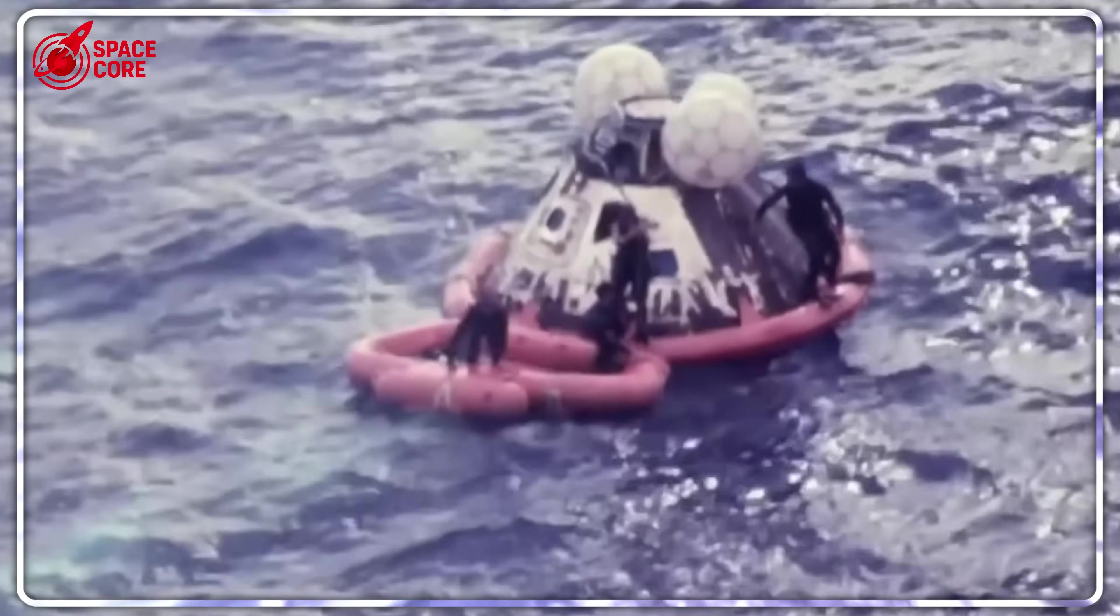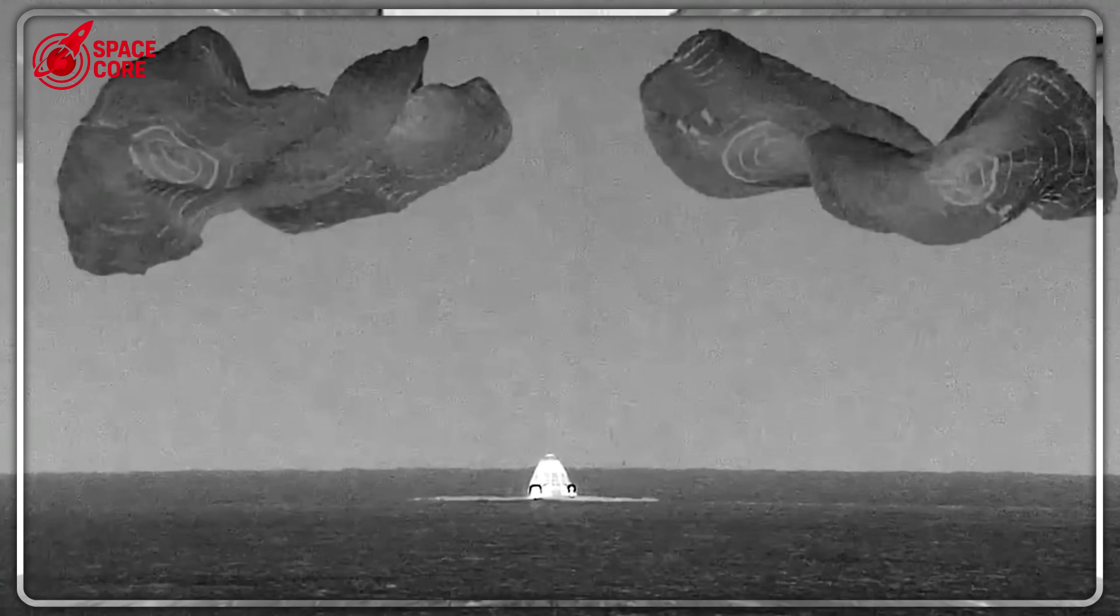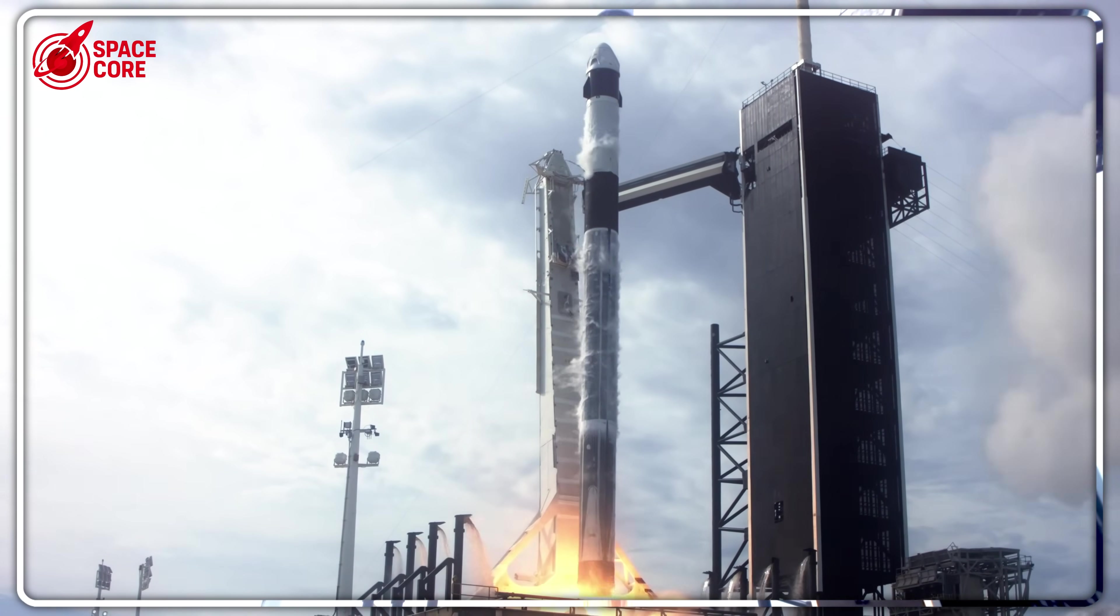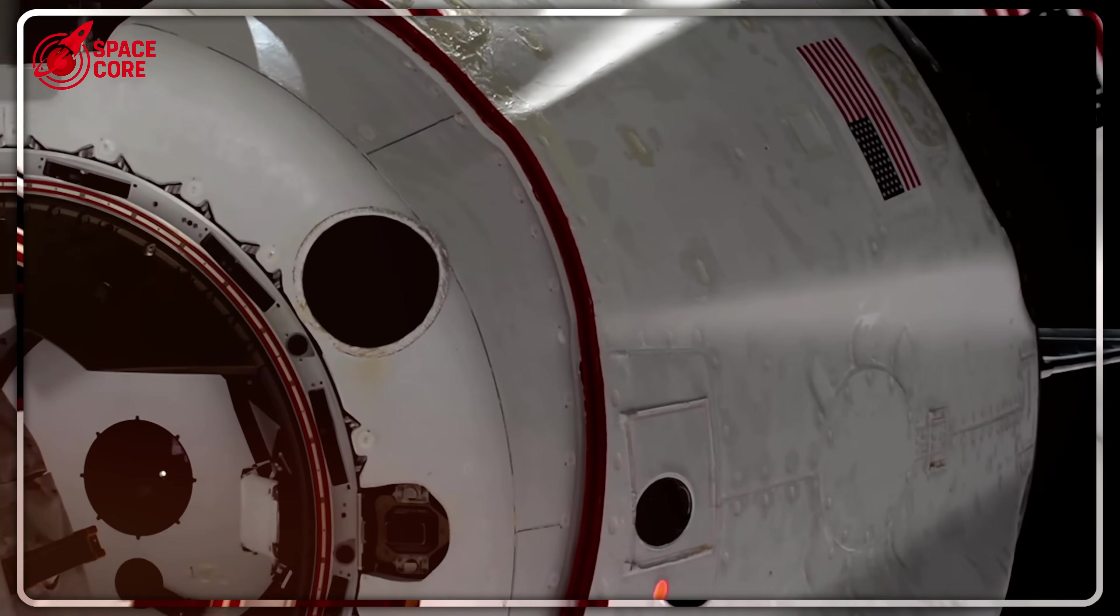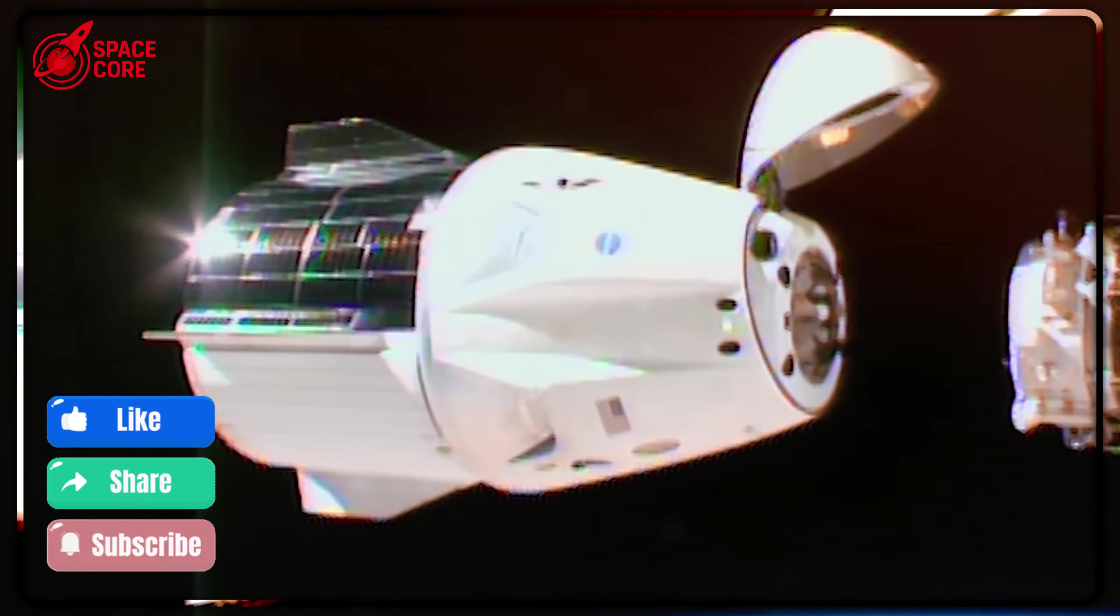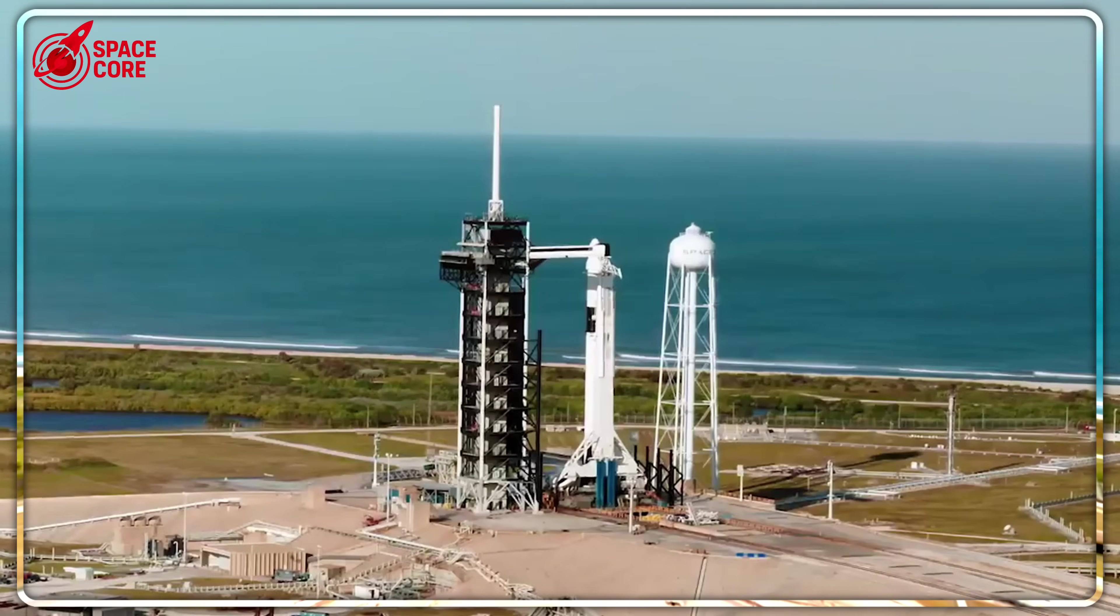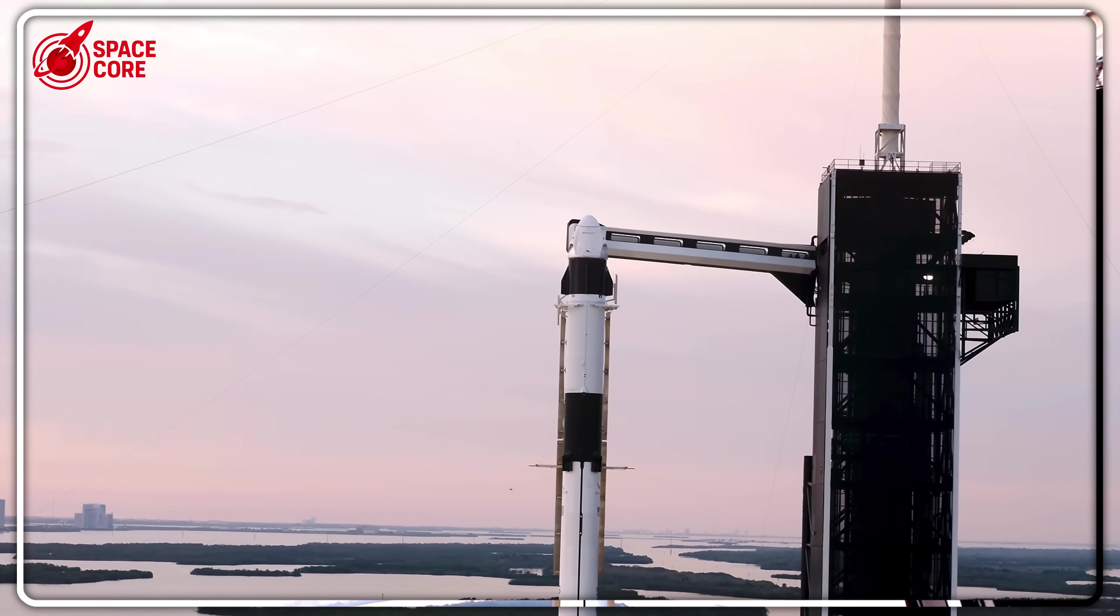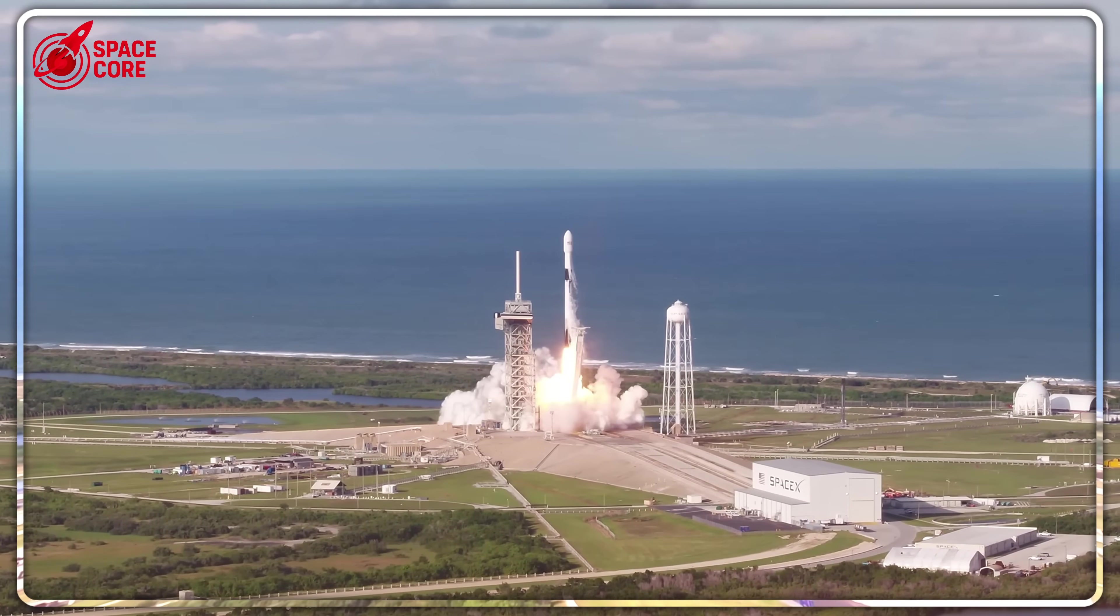So here we are. Dragon's water landing success was actually its biggest failure. Proof that SpaceX was stuck using 60-year-old Apollo technology while Mars waited. Musk's crazy fix? Retire the capsule that saved American space flight and bet everything on an untested rocket that lands like a sci-fi movie. But here's what keeps me up at night. What if Starship hits the same engineering wall that killed Dragon's Mars dreams? What if the safety systems needed to keep humans alive make it too heavy for interplanetary travel?